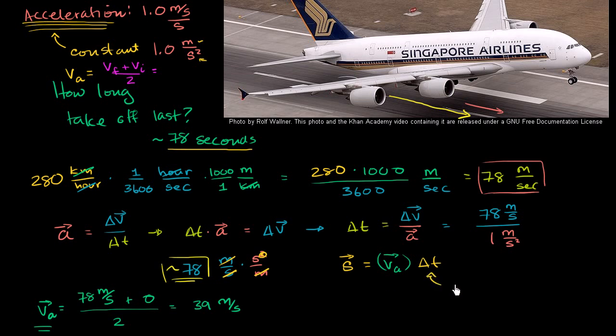So we know the change in time is 78 seconds. We know our average velocity here is 39 meters per second, just the average of 0 and 78, 39 meters per second.